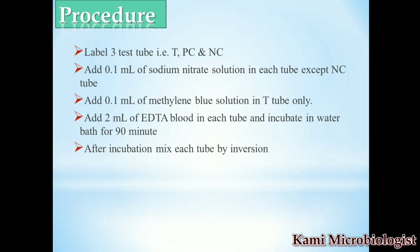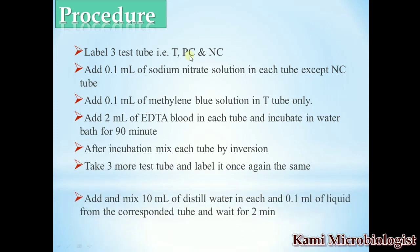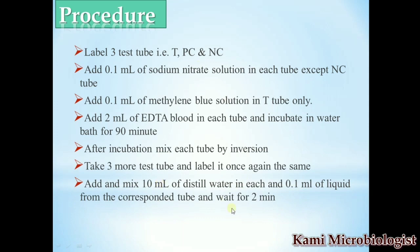After incubation, mix each tube by inversion. Then take another three clean tubes and label them again as T, PC, and NC. Add 10 ml of distilled water into each of these three new tubes, as well as 0.1 ml (100 microliters) of liquid from the corresponding previously incubated tubes. Mix and incubate for two minutes.